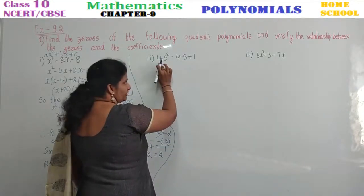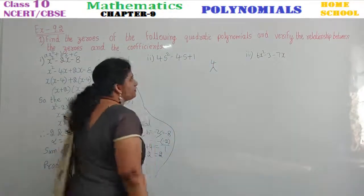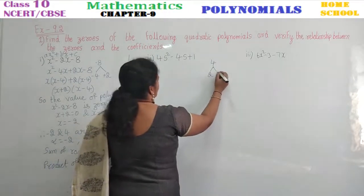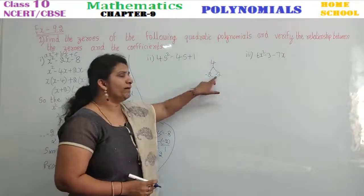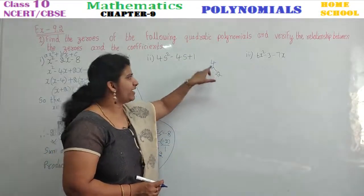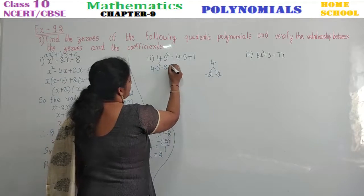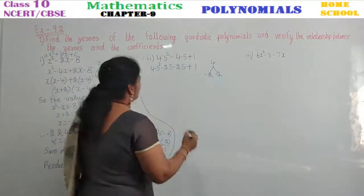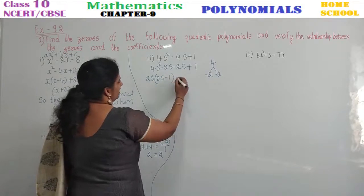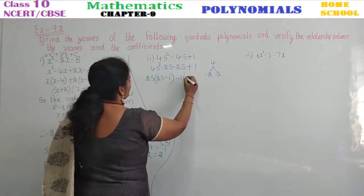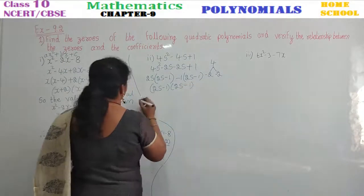Multiply the leading coefficient and the constant: 4 × 1 = 4. Find factors of 4 that give -4 when added: take -2 and -2, since -2 + (-2) = -4 and (-2) × (-2) = +4. Now split: 4s² - 2s - 2s + 1. In the first two terms, 2s is common: 2s(2s - 1). In the last two terms, nothing is common so take 1 as common: 1(2s - 1). This gives (2s - 1)(2s - 1).